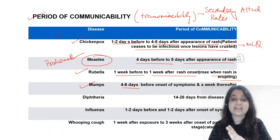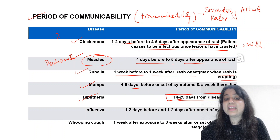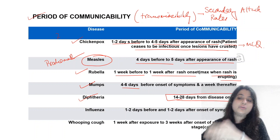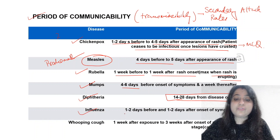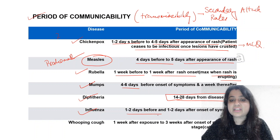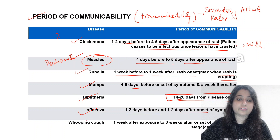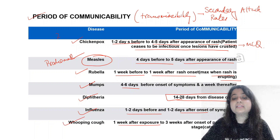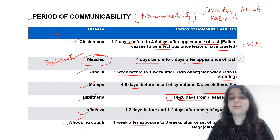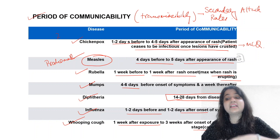Diphtheria is very important: 14 to 28 days. Influenza: 12 to 72 hours, basically one to two days before and one to two days after onset of symptoms. Whooping cough: one week after exposure to three weeks after onset of paroxysmal stage.